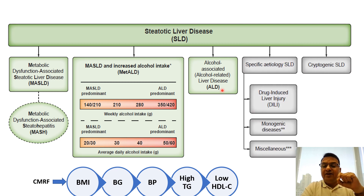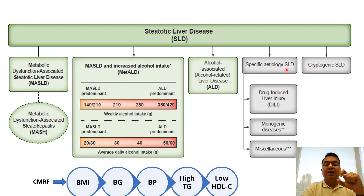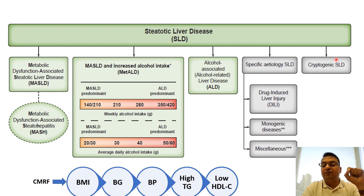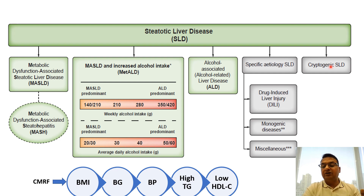There is also a category wherein patients with steatotic liver disease have a specific etiology — such as a history of drug administration like drug-induced liver injury, or maybe a monogenic liver disease. Those patients fall into the specific etiology SLD category. Then there are patients with SLD who have no known etiology for their steatotic liver disease, no cardiometabolic risk factors, no alcohol consumption history, and no other disorder — those patients fall into the cryptogenic steatotic liver disease category.